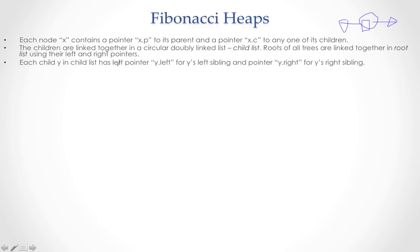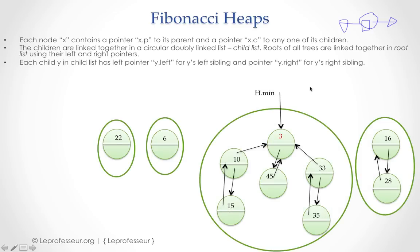Each child node has a left pointer and right pointer pointing to its left sibling or right sibling. Let's take an example. We have these four trees, four rooted trees, and we want to connect them in a Fibonacci heap using pointers so that they obey the property of Fibonacci heap.